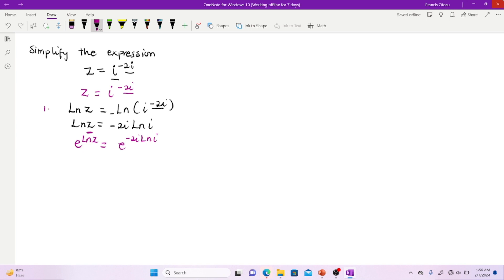If you have e to the power natural log of any number, then this e will nullify this. So the result is going to be the number here. That is basic logarithm properties.